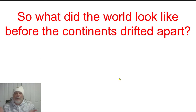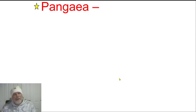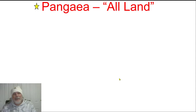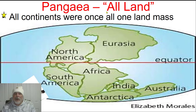So what did the world look like before the continents began drifting apart? The idea is that you had something called Pangaea, which breaks down: pan means all, and gea means earth or land. So this is all land — all continents were once one landmass. Pangaea.